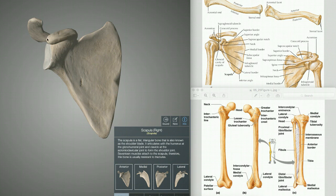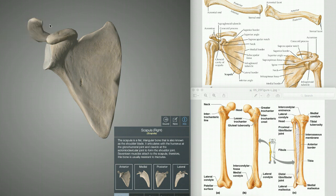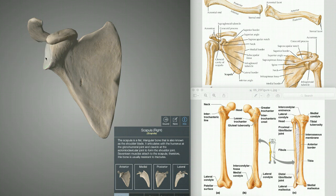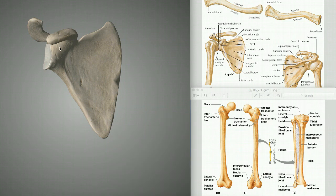Here we have the coracoid process, this arch, branching out. On the top we have the acromion, which then has also a small facet - the articular facet of the acromion - known as the clavicular articular facet, so it binds or connects to the clavicle. And this is the other articular surface, which connects to the humerus via the glenoid cavity. This area here is known as the neck of the scapula.